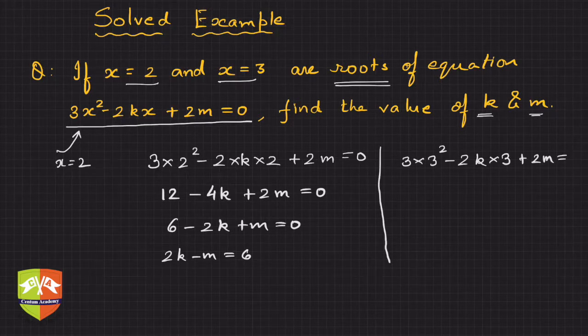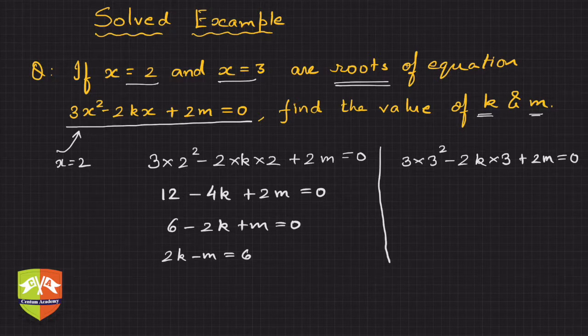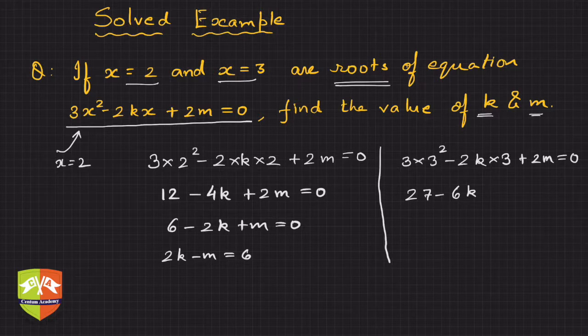Hence, 3 times 9 is 27, minus 6k, minus 6k, and plus 2m equals 0.